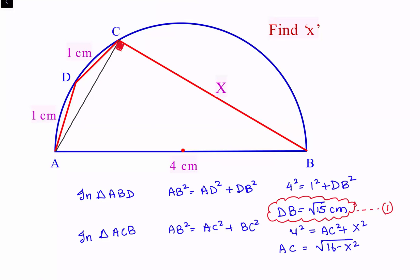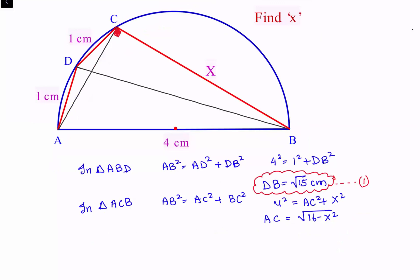So we have the value of BD and the value of AC. Now if we use Ptolemy's theorem — which we discussed in video number 29 — Ptolemy's theorem states that in a cyclic quadrilateral the sum of the products of opposite sides equals the product of the diagonals. So for cyclic quadrilateral ABCD: AB × CD + AD × BC = AC × BD.